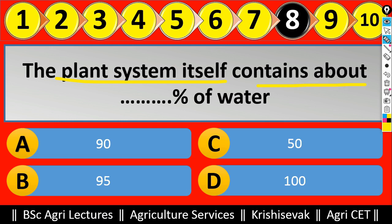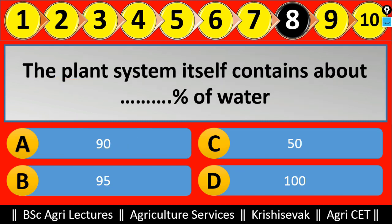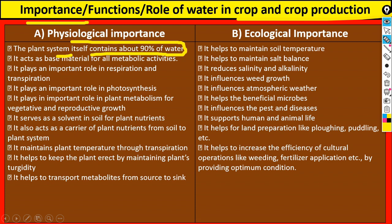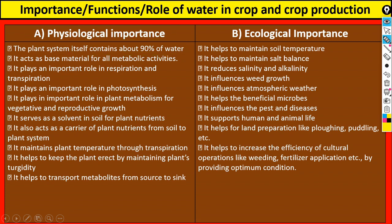Question number eight: 'The plant system itself contains about ______ percent of water.' Options are: A) 90 percent, B) 95 percent, C) 50, and D) 100. The right answer is 90 percent. We studied this in our lecture on the physiological importance of water — the plant system itself contains about 90 percent of water.